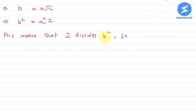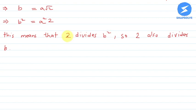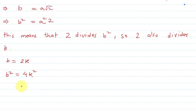If 2 divides b squared, that means 2 also divides b, because 2 is a prime number. So 2 is a divisor of b — we have proved that b is divisible by 2.